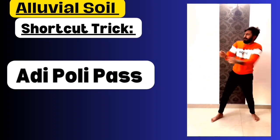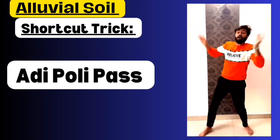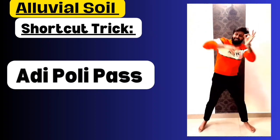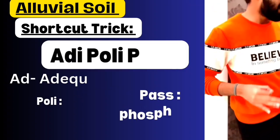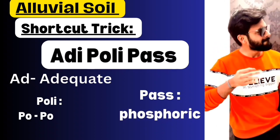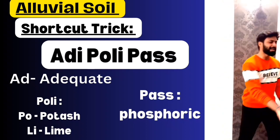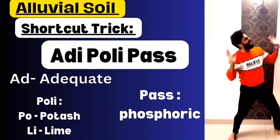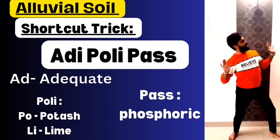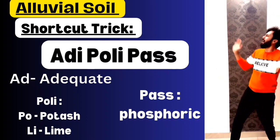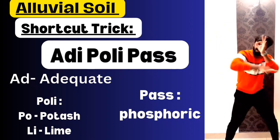The next shortcut is ADIPOLI PASS. Adipoli is a Malayalam word meaning excellent. Take ADI: Adi stands for adequate. Take POLI: PO stands for potash, LI stands for lime. Then take PASS: PAS refers to phosphoric acid. So alluvial soil contains adequate amounts of potash, lime, and phosphoric acid.